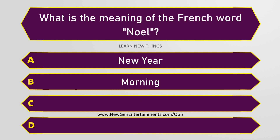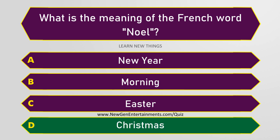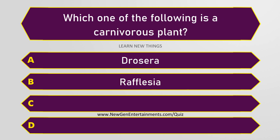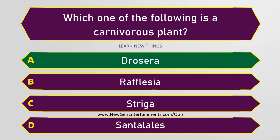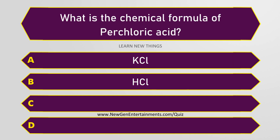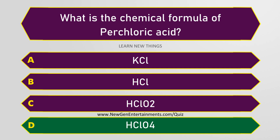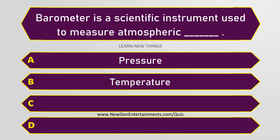What is the meaning of the French word Noel? Christmas. Which one of the following is a carnivorous plant? Drosera. What is the chemical formula of Perchloric Acid? HClO4. Barometer is a scientific instrument used to measure atmospheric pressure.